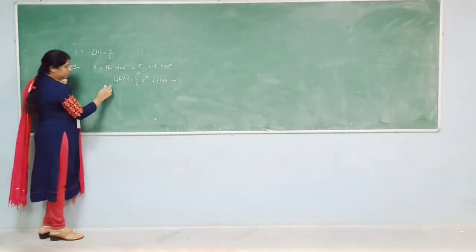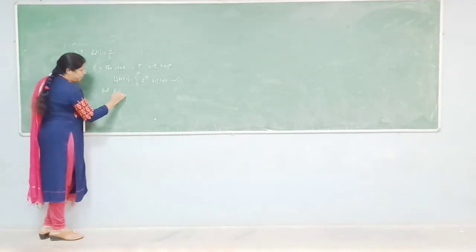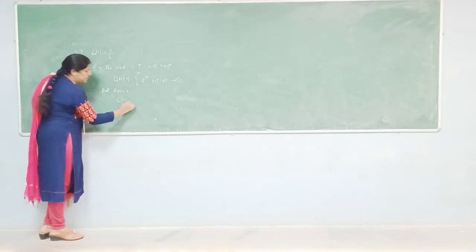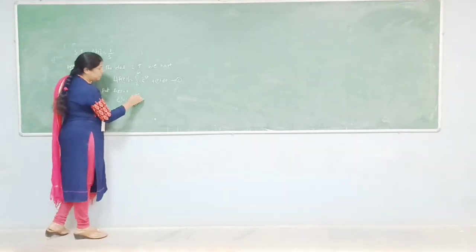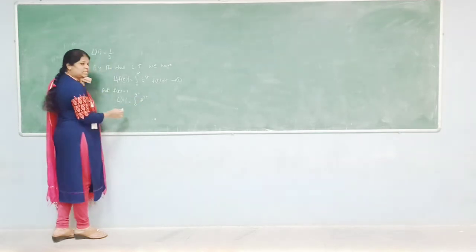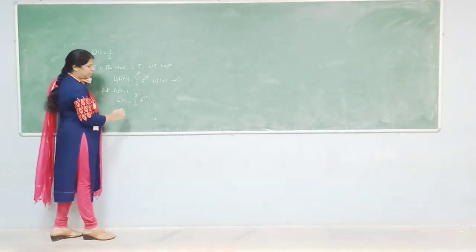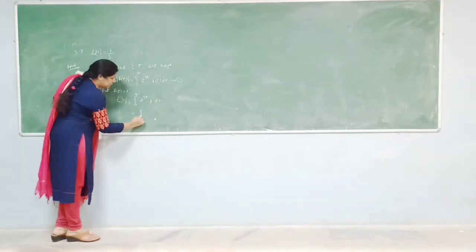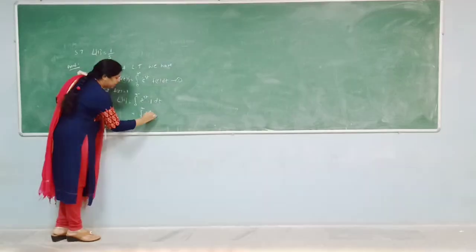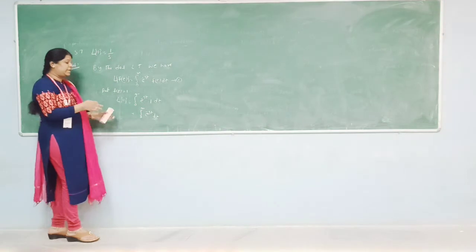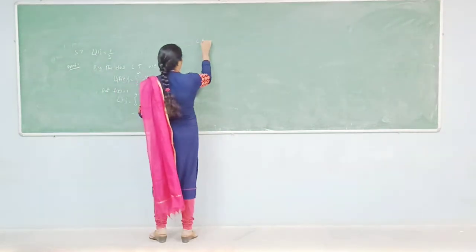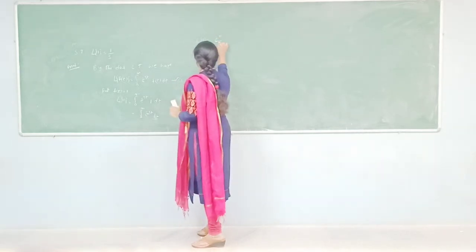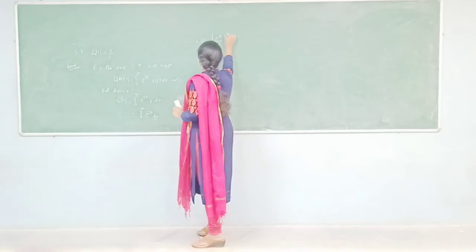Substituting f(t) = 1 in the above, we get L{1} = integral from 0 to infinity of e^(−st) into 1 dt = integral from 0 to infinity of e^(−st) dt. Applying integration, we get e^(−st) divided by (−s), with upper limit infinity and lower limit 0.